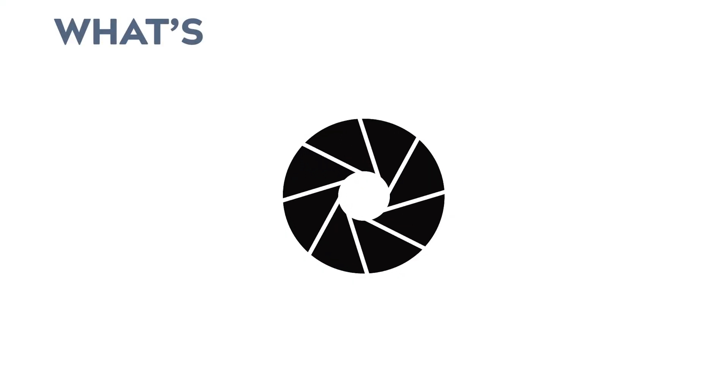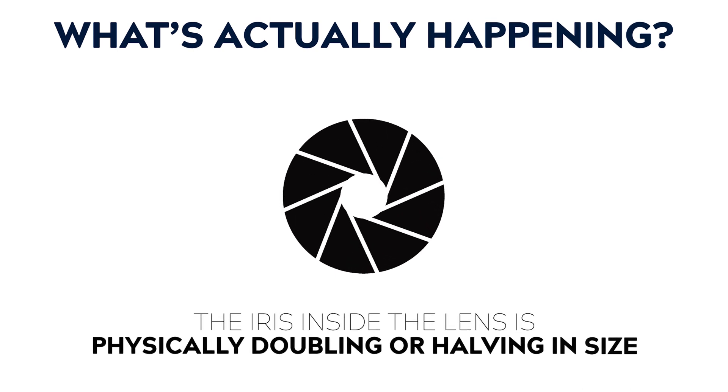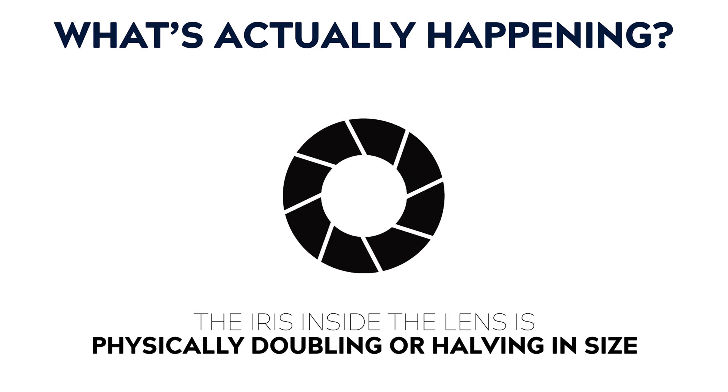Let's talk about what's physically happening inside the lens every time we change our aperture value. Every time you go up or down a value on the scale, the iris inside the lens is physically doubling or halving in size. Aperture scales come in full stop, half stop and one third stop increments. But if you're new to this, I suggest just focusing on the full stop values. In the ten years that I've been shooting, I've never needed to learn the half stop and third stop values off by heart — it's just not something you use very often.